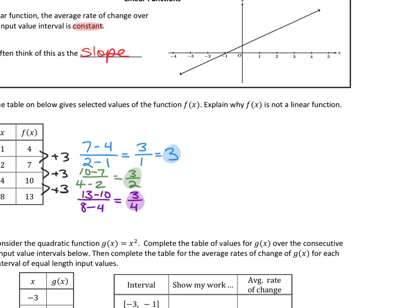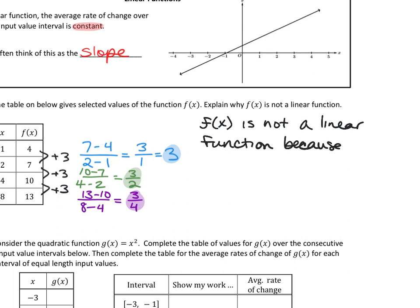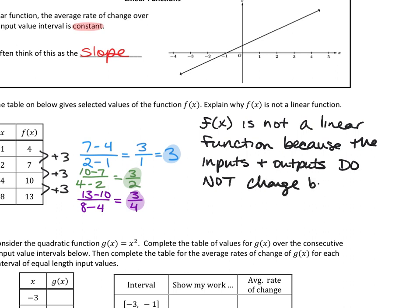There's going to be a lot of explanation and reasoning today. f(x) is not a linear function because the inputs and outputs do not change by a constant rate. That's the definition of a linear equation — that all of the inputs and outputs, every interval you choose, has the same slope. We don't have the same slope every time, so we know it is not linear.